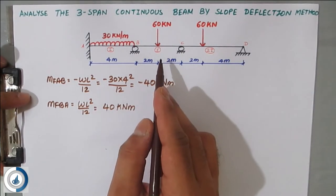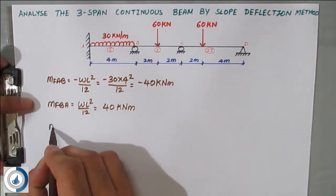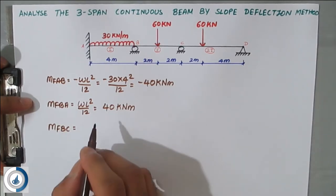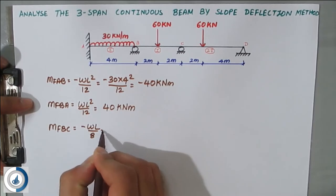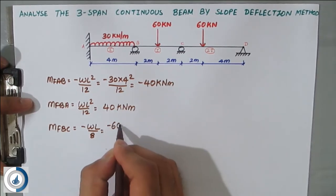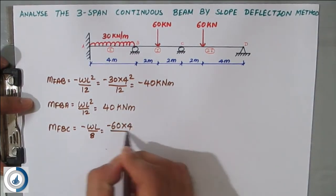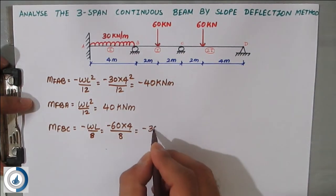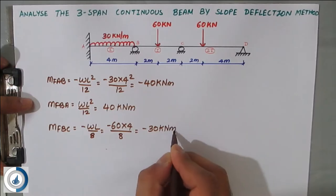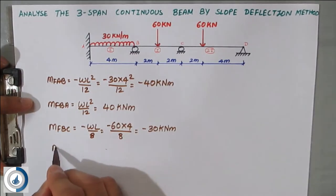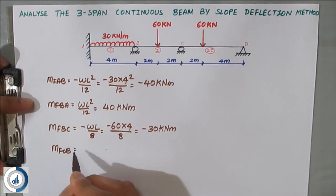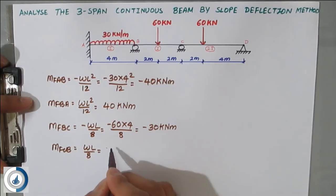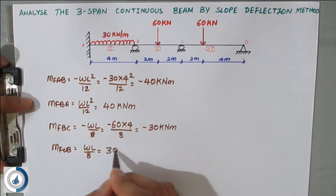For the point load at the center, MF_BC = −wL/8. Here w = 60 and the span is 4 meters, so MF_BC = −60×4/8 = −30 kN·m. Next, MF_CB = +wL/8 because it is in the clockwise direction, so MF_CB = +30 kN·m.